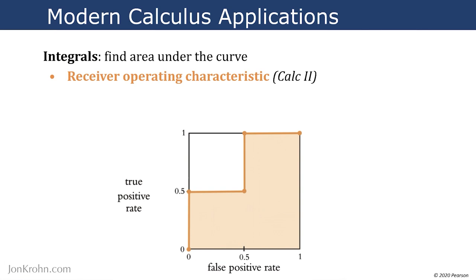A model that's predicting between two different classes, like is this thing a hot dog or not a hot dog? Is this thing a dog or a cat? We see this metric a lot, and we're going to dig into the metric as well as using integral calculus to calculate the area under the curve.